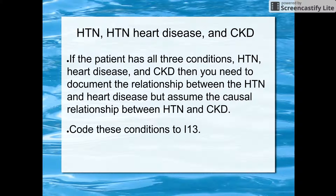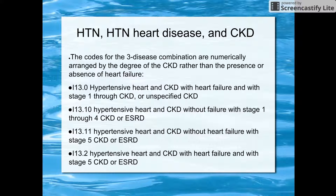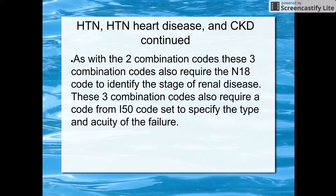If a patient has all three conditions — hypertension, heart disease, and chronic kidney disease — the provider needs to document the relationship between hypertension and heart disease. But we can assume there is a causal relationship between hypertension and chronic kidney disease. These three conditions are coded to I-13. The I-13 codes require N-18 to identify the chronic kidney disease stage and I-50 to specify the type of heart failure.